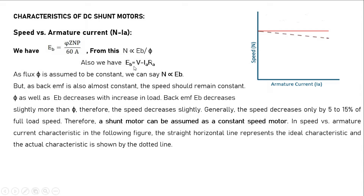Since flux φ is assumed constant in a shunt motor, N is directly proportional to Eb. As back EMF is also essentially constant, the speed should remain constant. If φ as well as Eb decrease with increase in load, back EMF Eb decreases slightly more than φ. This is due to a concept called armature reaction, which decreases the total flux produced by the poles.